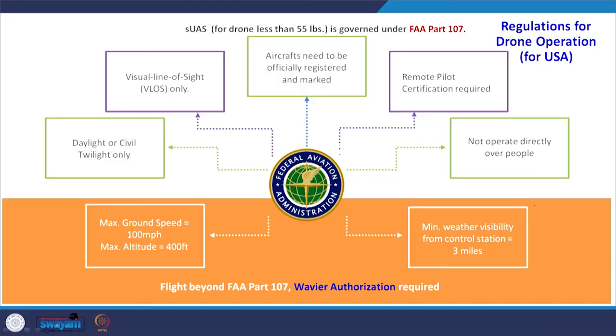Remote pilot certification is required. The drone must be officially registered and a number is given to the operator. Visual line of sight is required — you can fly only as long as it is visible to you, and only in daylight. Ground speed maximum is 100 miles per hour, altitude limit is 400 feet or 120 meters, minimum weather visibility is 3 miles, and you cannot operate directly over people. These are the regulations the US imposes.